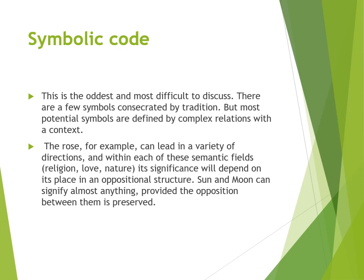The symbolic code is the oddest and most difficult to discuss. There are a few symbols created by tradition, but most potential symbols are defined by complex relations with a context. For example, roads can lead in a variety of directions and within each of these semantic fields, its significance will depend on its place in an oppositional structure. Sun and Moon can also signify almost anything provided the opposition between them is preserved.